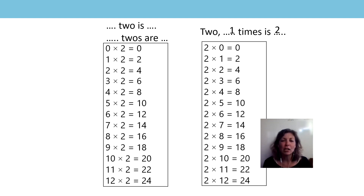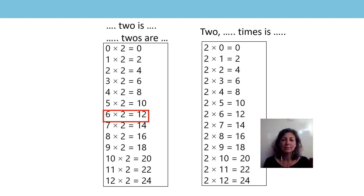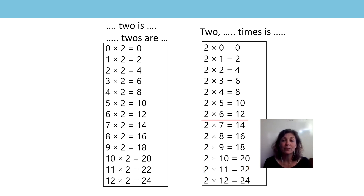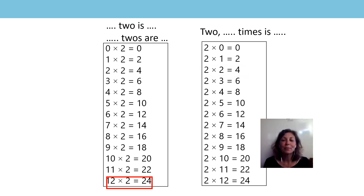I'm going to challenge you now. I wonder if I highlight some of the equations — do you think you could say them using our stem sentences? I bet you can. Are you ready? 6 twos are 12. 2, 11 times is 22. 2, 6 times is 12. 2, 2 times is 4. 12 twos are 24.